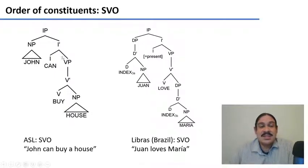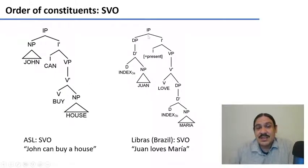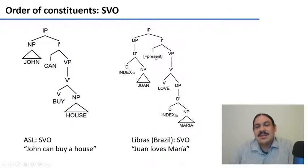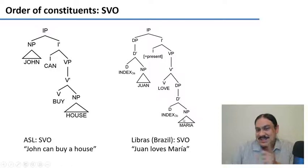You can see that the trees are exactly the same. In the Brazilian one, we have an inflectional phrase with a subject that is a determiner phrase. We're going to put these indexes in the place of the terms — so index Juan, loves, Maria.